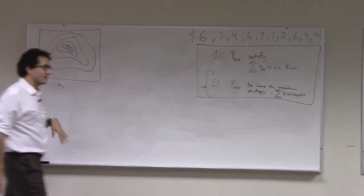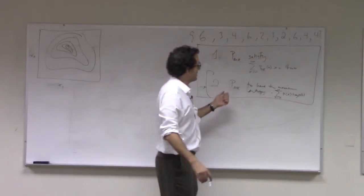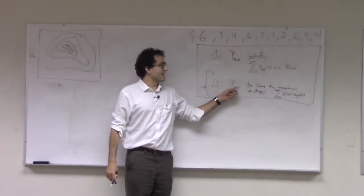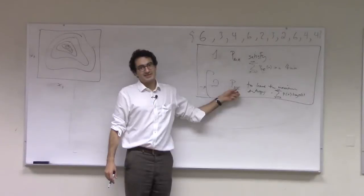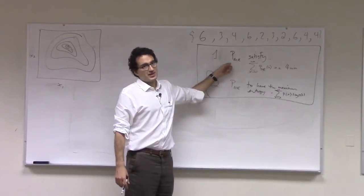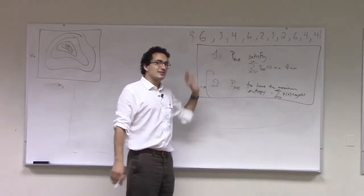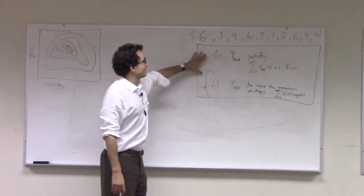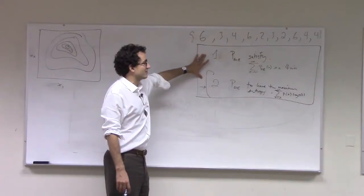And what we'll talk about in one of the appendices, if we have time, is why we can prove that the entropy function has a unique maximum, even when you subject it to these constraints. For now you can just take it on faith that this problem has a unique solution.